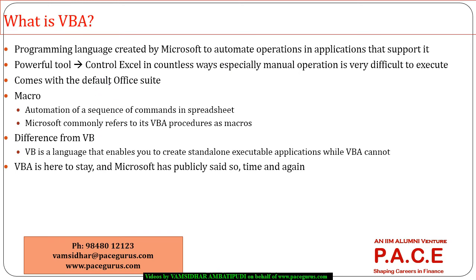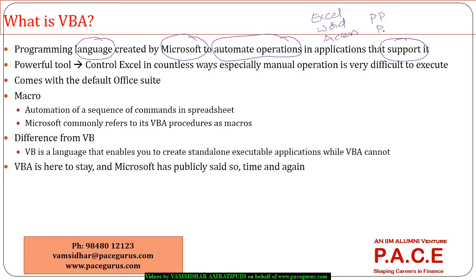VBA is as good as any other programming language — like C, C++, or Java. It is a programming language created by Microsoft especially for the purpose of automating operations in applications. Whatever applications are supported by Microsoft, like Office applications — Excel, Word, Access, PowerPoint, MS Project — there are different kinds of applications supported by Microsoft.